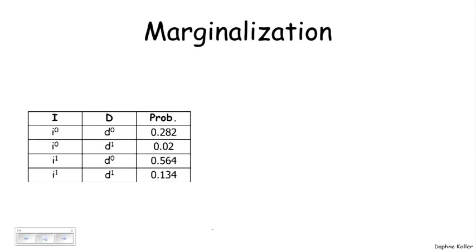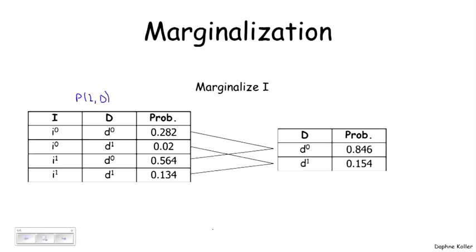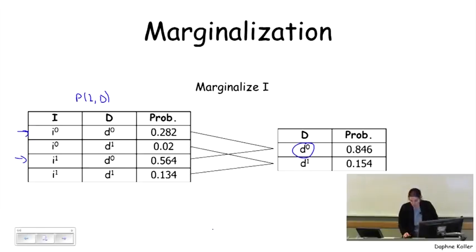The final operation that I'm going to talk about regarding probability distributions is the operation of marginalization. And that is an operation that takes the probability distribution over a larger subset of variables and produces a probability distribution over a subset of those. So in this case, we have a probability distribution over I and D. And say we want to marginalize I, which means we're going to sum up, throw away I, and restrict attention to D. And so what that does is, for example, if I want to compute the probability of D0, I'm going to add up both of the entries that have D0 associated with them. And that's the one corresponding to I0 and the one corresponding to I1. And that's the marginalization of this probability distribution.